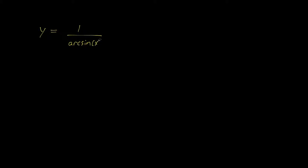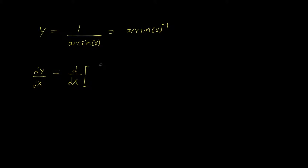We're going to take the derivative of 1 over arcsin(x). First, we want to take the derivative with respect to x of both sides, so we get dy/dx equals d/dx of — let's rewrite 1 over arcsin(x) as arcsin(x) to the negative 1, so it's a little more clear how we're going to apply the power rule.